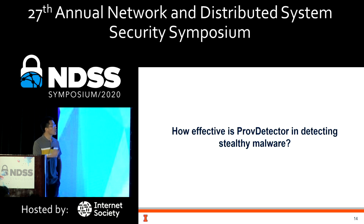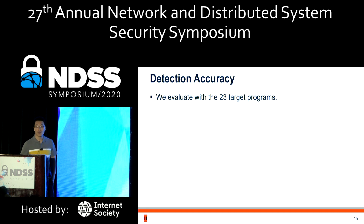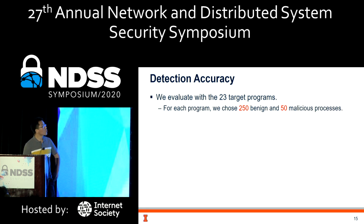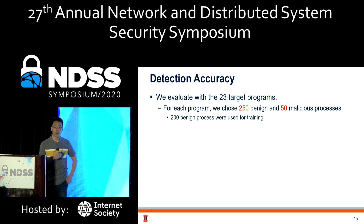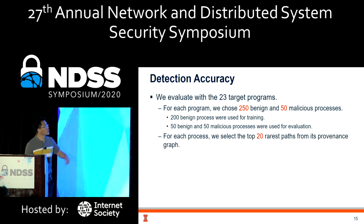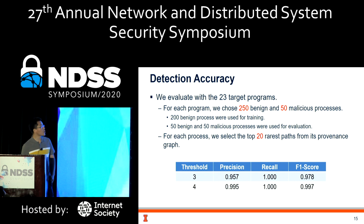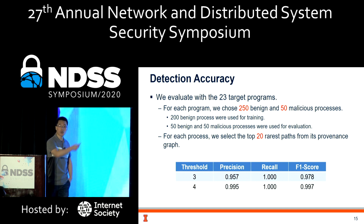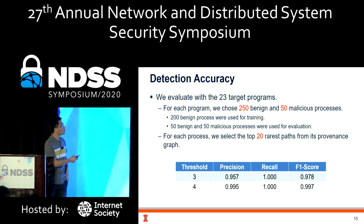To evaluate how effective ProDetector is at detecting stealthy malware, for the 23 target programs, we chose 250 benign processes and 50 malicious processes for each. 200 benign processes were used for training the anomaly detection model, and the remaining 50 benign and 50 malicious processes were used for evaluation. For each process, we selected the top 20 rarest paths from the provenance graph. On average, using a threshold of three or four — that is, requiring only the top three or four rarest paths — we could already achieve very high recall and very high precision.